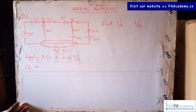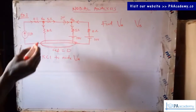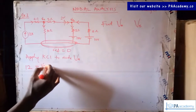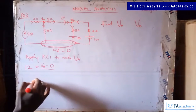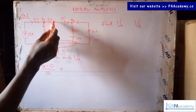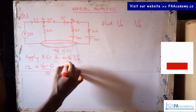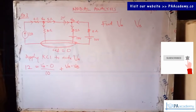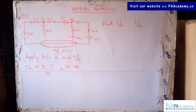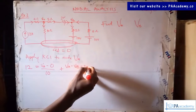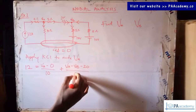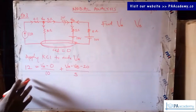So 12 equals the outgoing currents. Starting with the path from Va to the reference point: that gives Va minus zero divided by 10 ohms. The next outgoing current goes from Va to the next node Vb — that gives Va minus Vb. Now there is a voltage source in between, and based on the polarity — from positive to negative in our direction — that would be minus 20, all divided by 5 ohms.